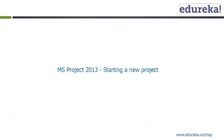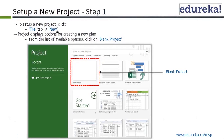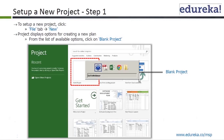How to start a new project: go to File, then New, and from the list of available options click on Blank Project. You may have many options — you can create a blank project, create from an existing project, or create new from an Excel workbook, etc. Let's go to the tool right now.